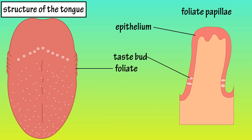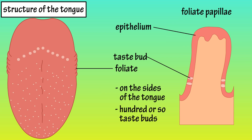Foliate papillae have a leaf-like shape and are found on the sides of the tongue toward the root of the tongue. They house about 100 or so taste buds.